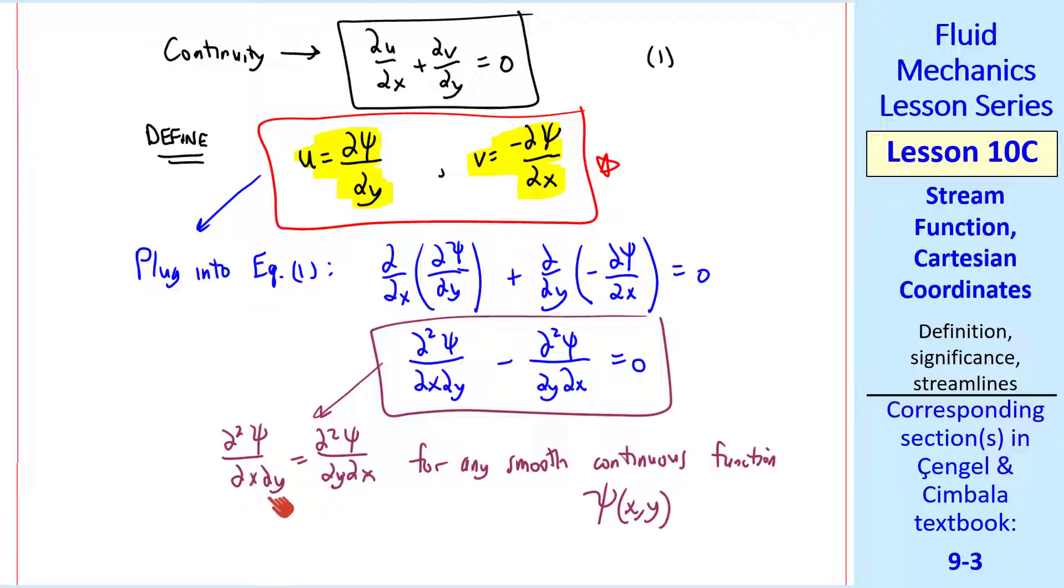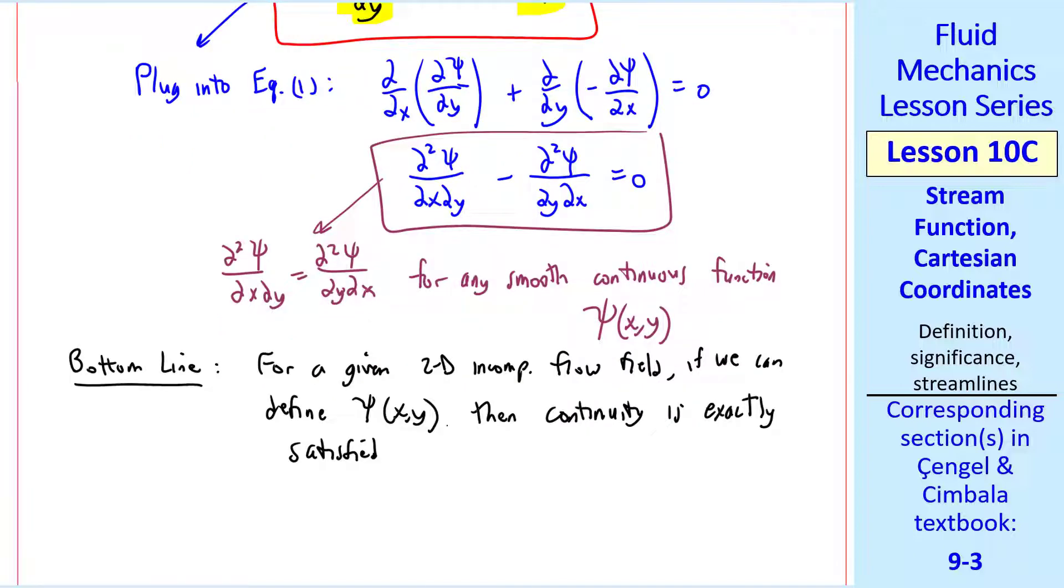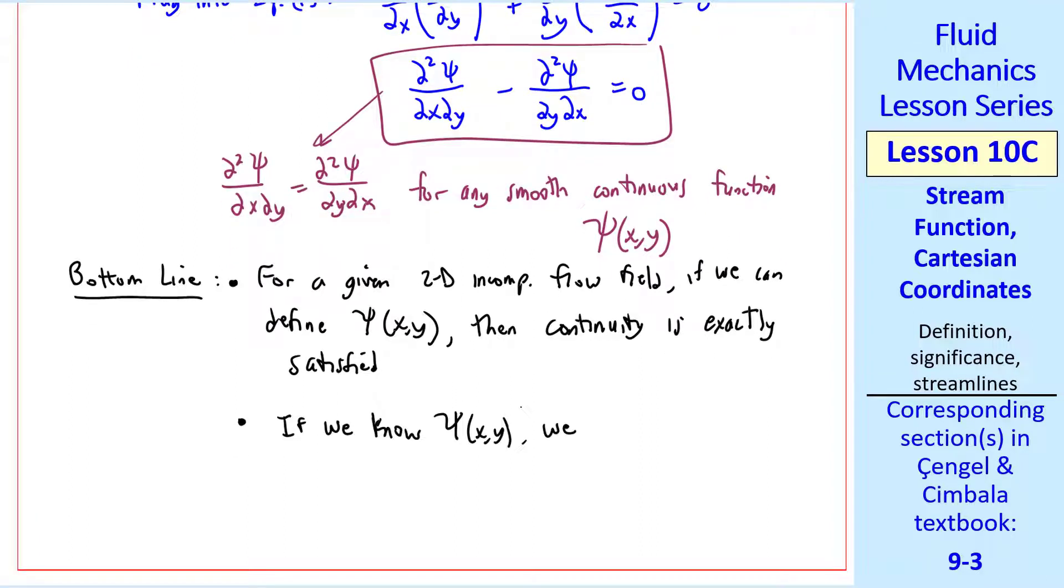But this is exactly satisfied since these second derivatives are equal for any smooth continuous function psi of x and y. In other words, the order of differentiation doesn't matter. The bottom line is that for a given 2D incompressible flow field in the xy-plane, if we can define psi of xy, then the continuity equation is exactly satisfied. And if we know psi of xy, we can easily calculate u and v by the definition of psi. So this is the mathematical usefulness of psi, the stream function.